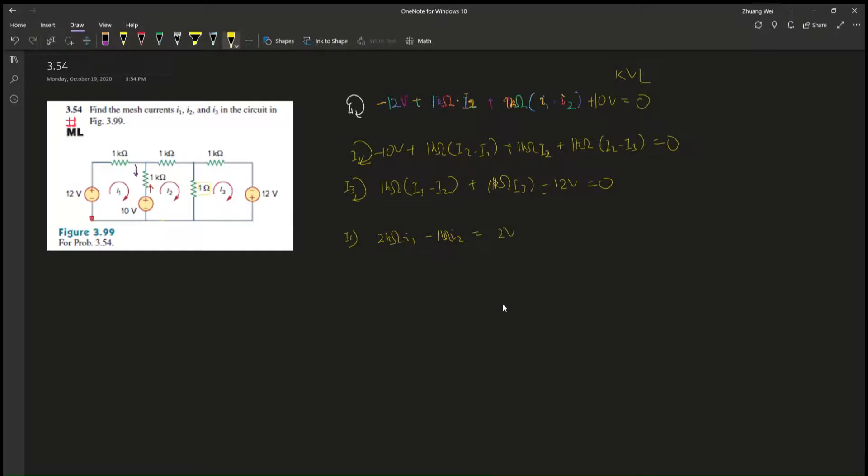And then we go i2, simplify these things. So we know that 10 will be on the other side. We have, let's see, so there's a negative i1, so it's negative 1k ohm i1. And then i2, so there's 1k, 2k, 3k, right? So plus 3k i2. And then i3 is just one, which is minus 1k ohm i3, right?